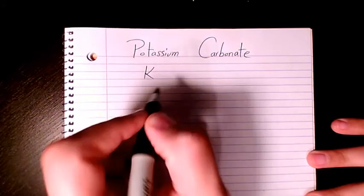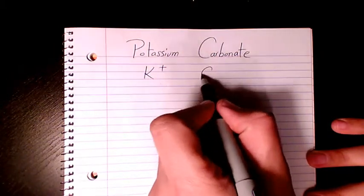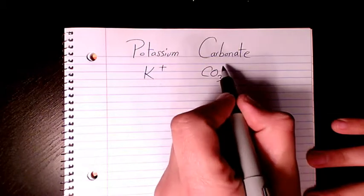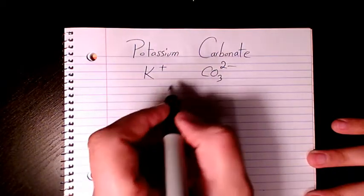So potassium is K. It belongs to group 1, so it's gonna be K+. And carbonate is the polyatomic ion which is CO3, and the charge is 2-.